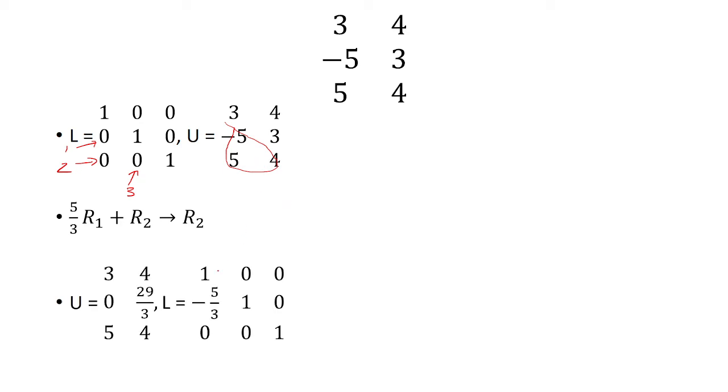So U becomes 3, 4, and then 0, 29 thirds, 5, 4. So the only thing we did was we changed the second row.